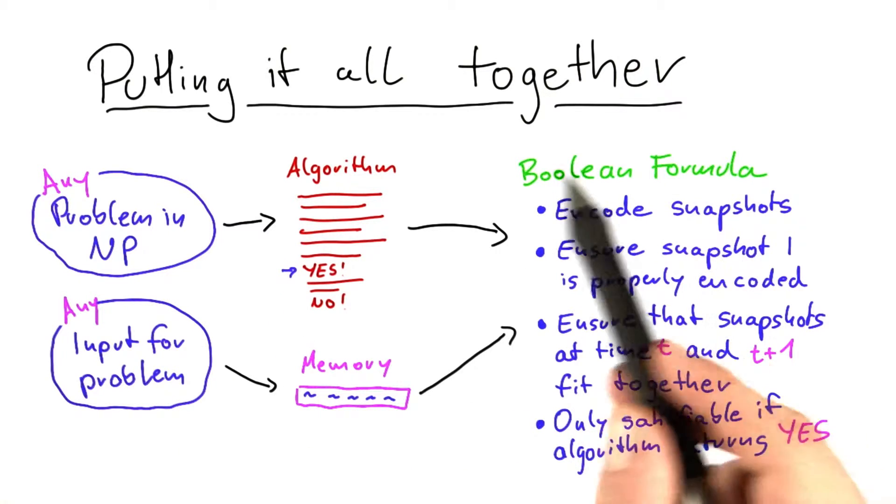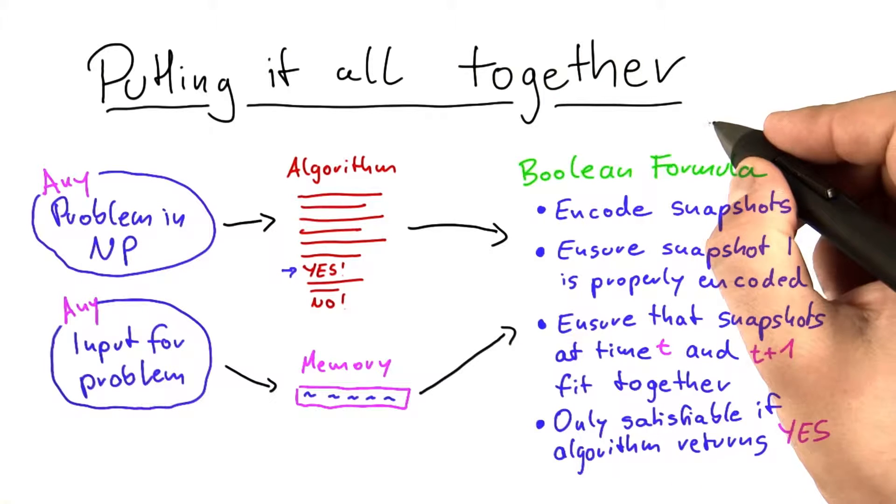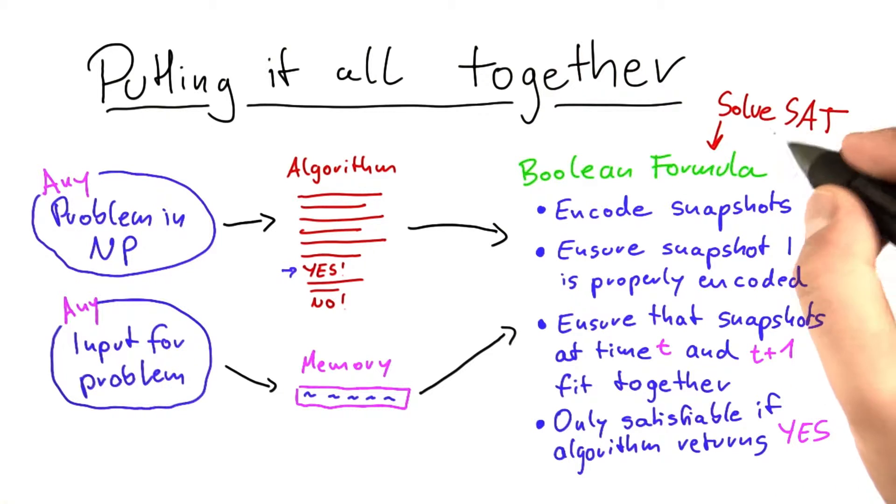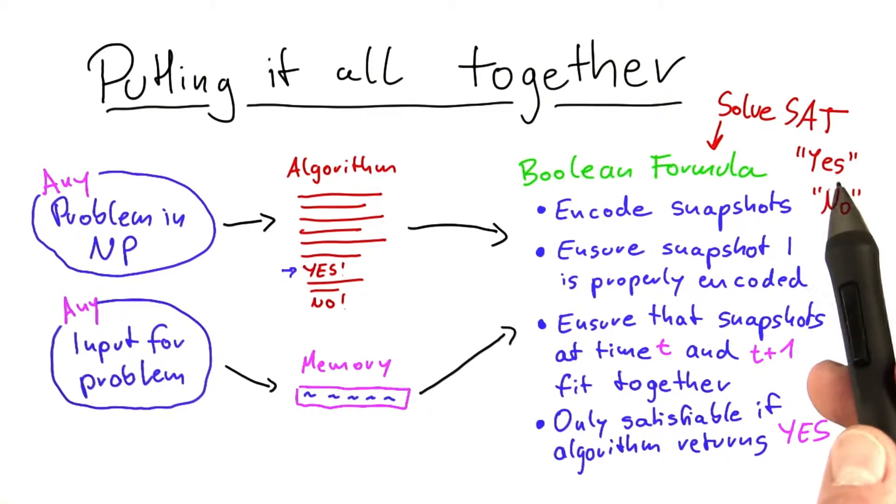So once we have constructed this Boolean formula, what happens if we solve SAT for this formula? Then there's two cases that can happen because SAT is also a decision problem. So either SAT returns yes or it returns no. What if it returns yes?